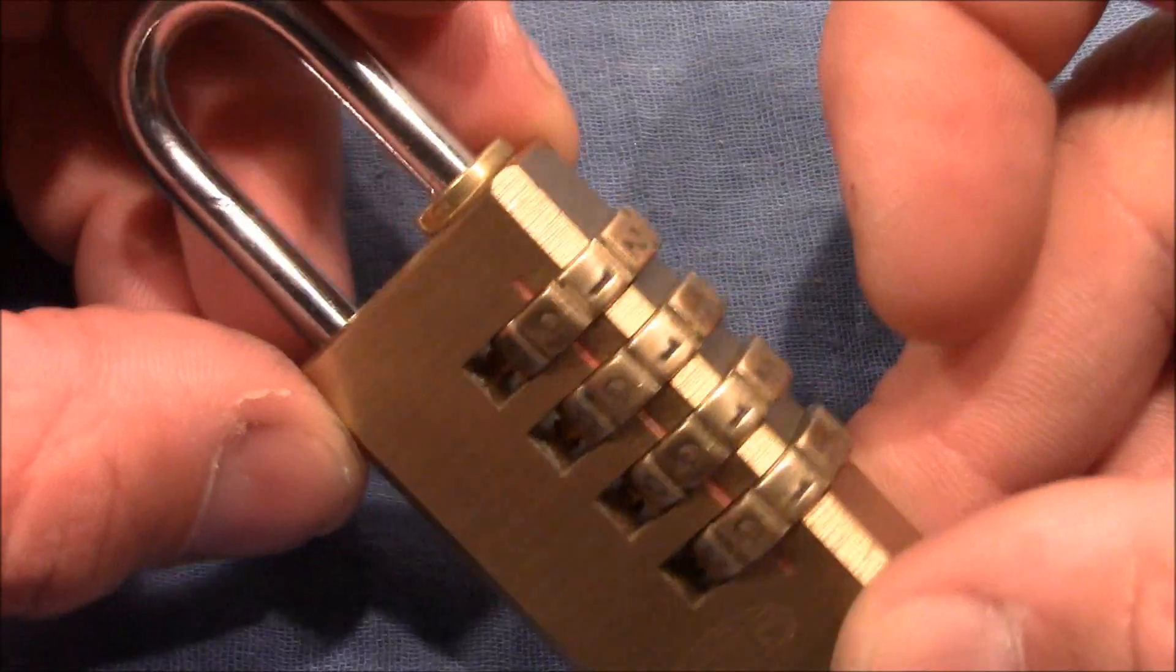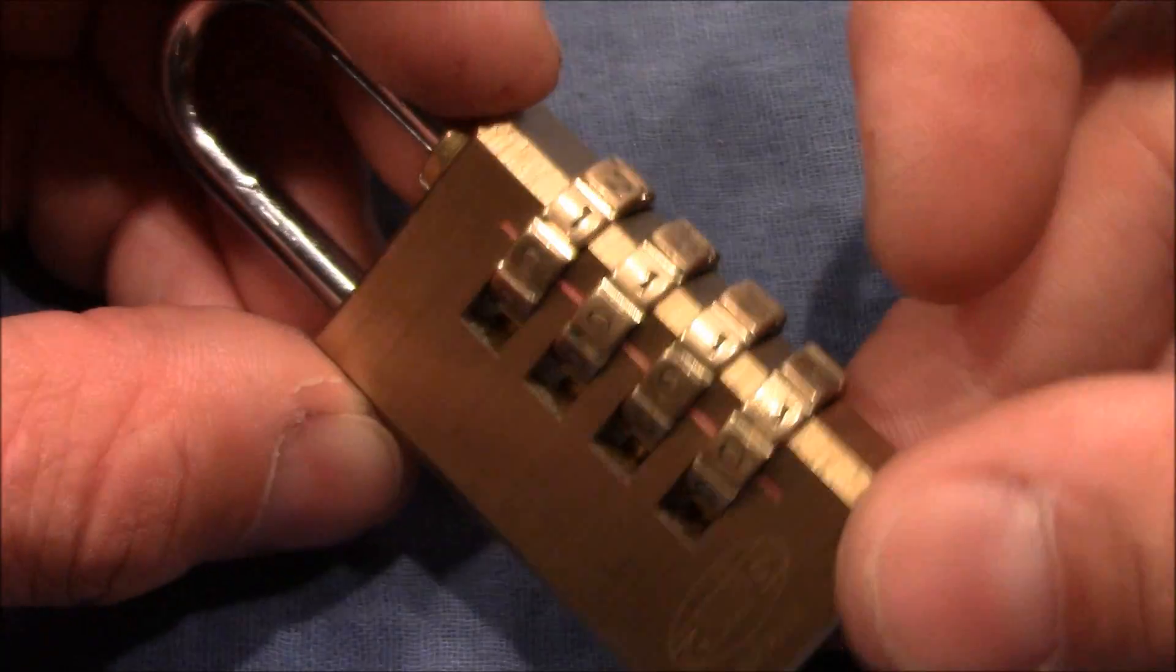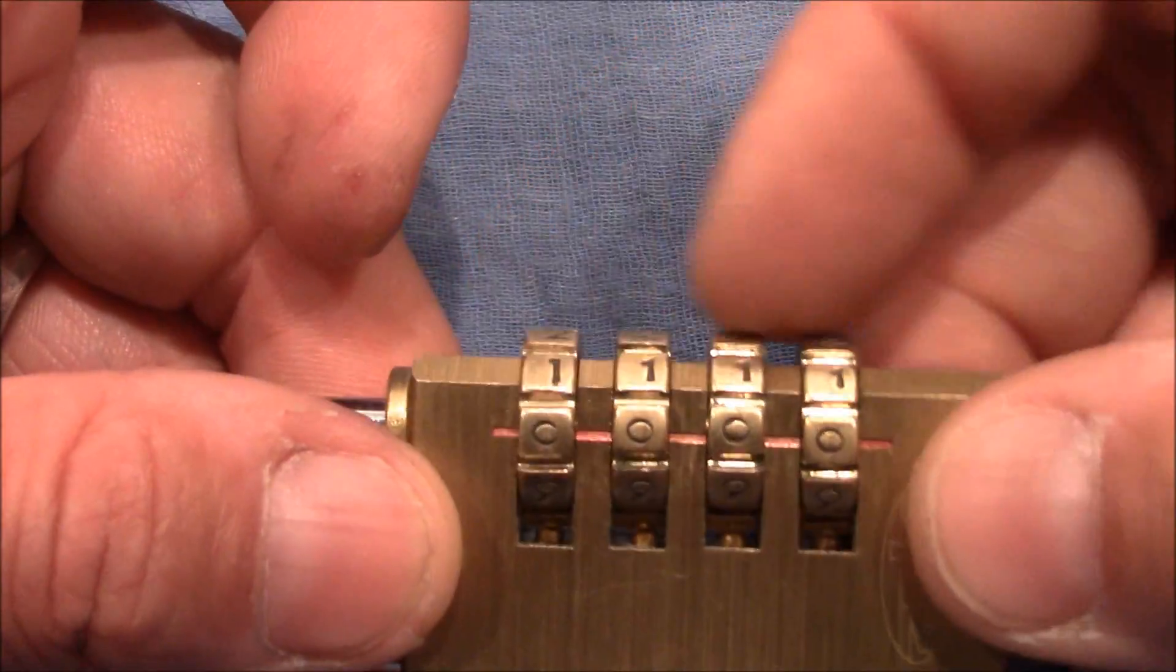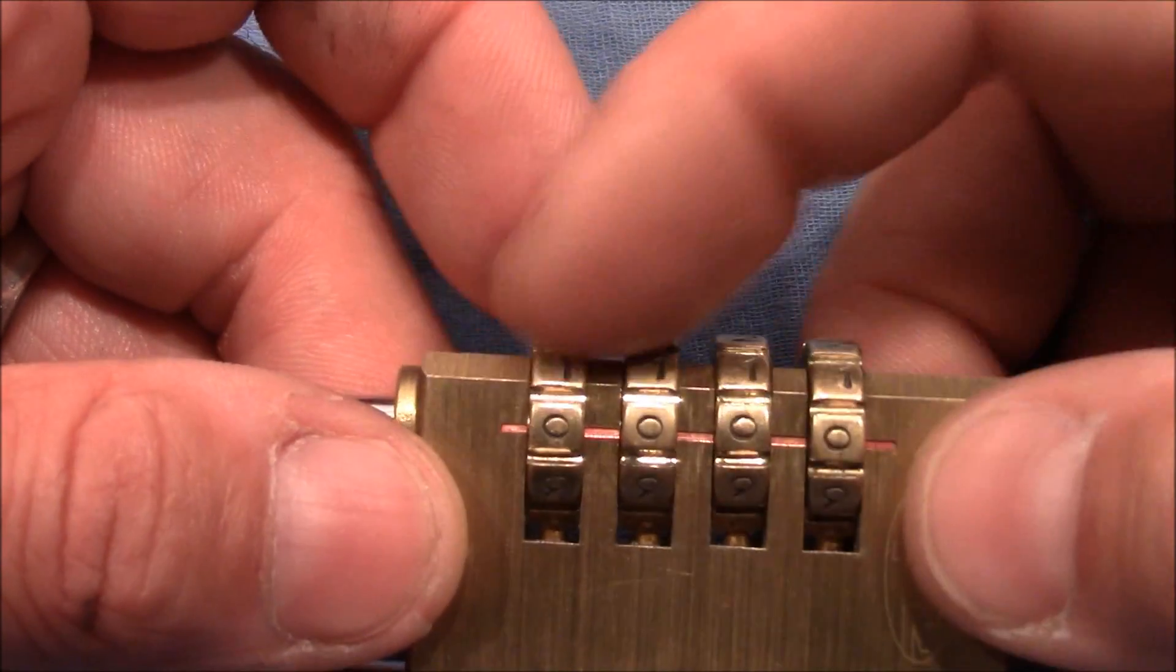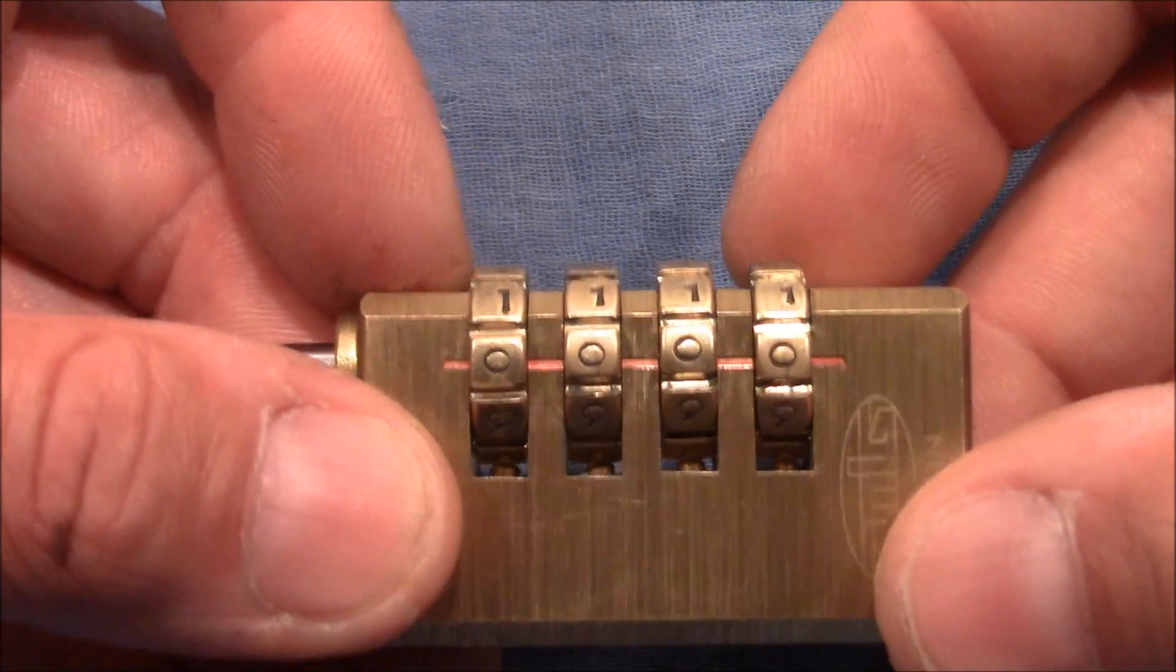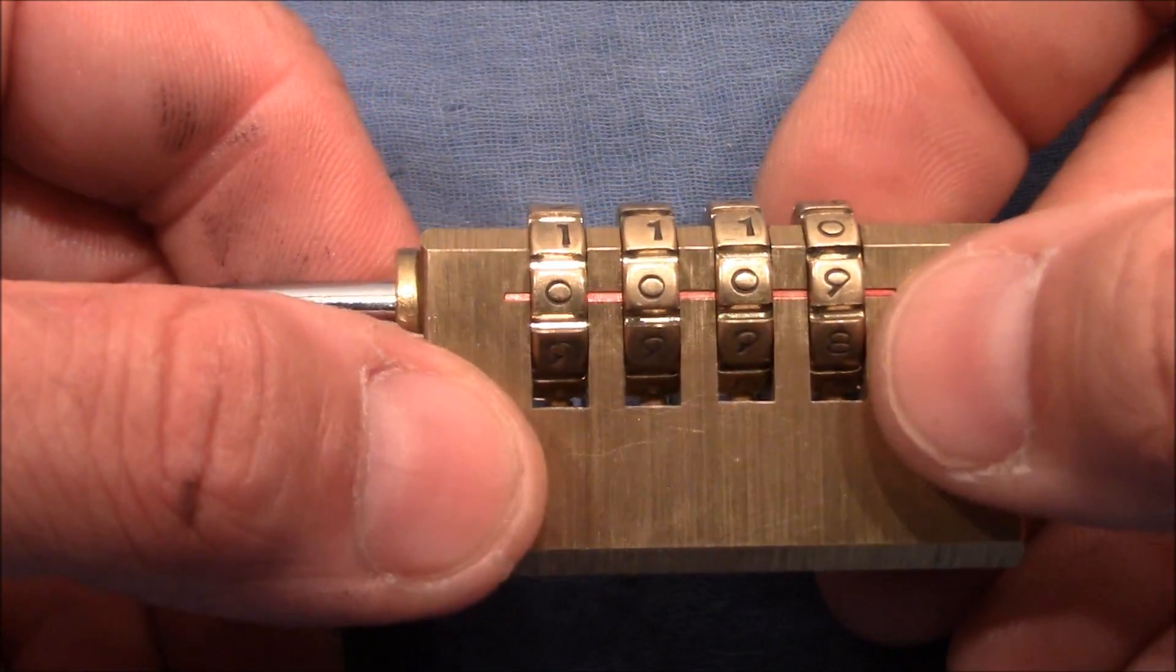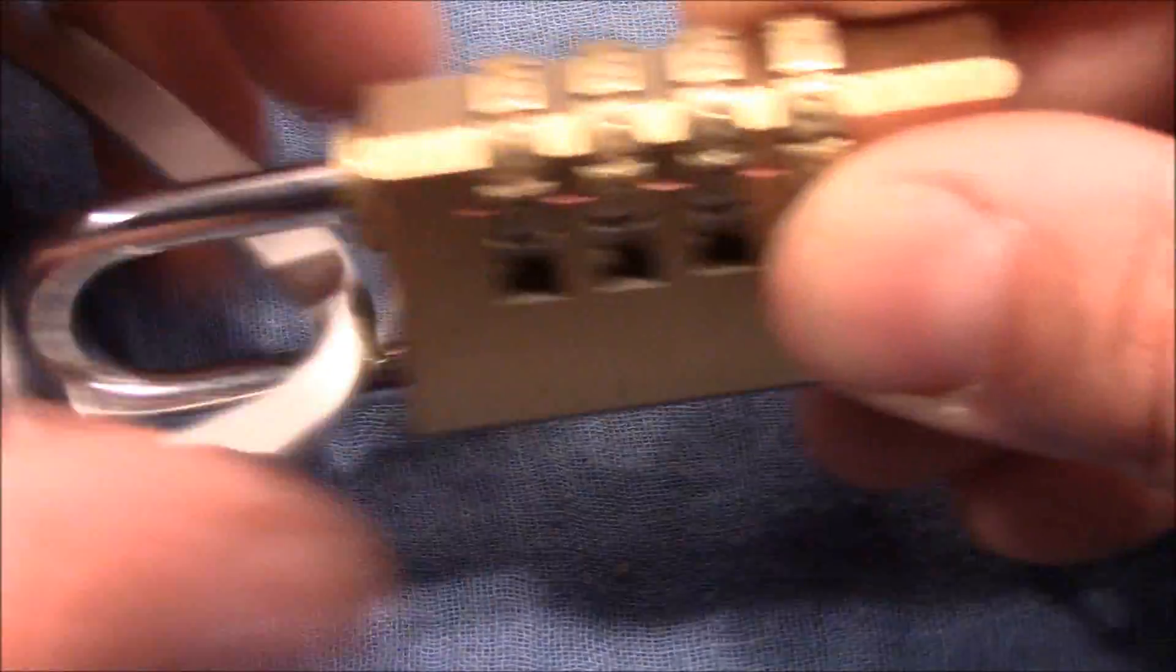Alright, so before I start decoding this lock, I want to explore the very special gate situation on this lock. And therefore I keep all the wheels at the open position and only change numbers of one wheel at a time. So I want to start with the last wheel and therefore I close the lock and turn it to the next position and apply tension on the shackle.